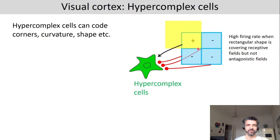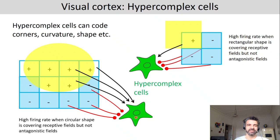For example, a particular hypercomplex cell would respond very strongly to light with a specific edge. Another hypercomplex cell would respond very strongly to a circle presented in its receptive field, because a circle like this would then activate the receptive fields of the complex cells, but not the antagonistic complex cells.